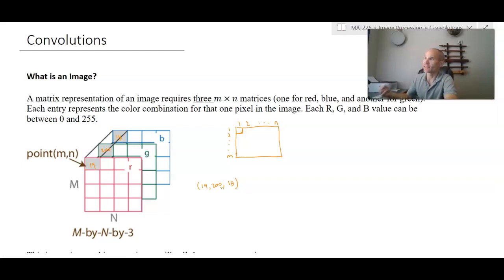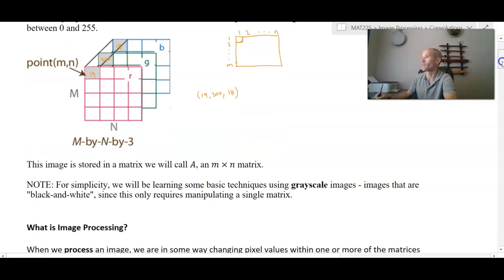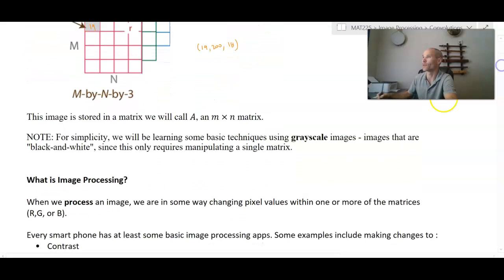So, given that that is the case, these are numerical values, we can manipulate these values in certain strategic ways and make the image change in its appearance. That is called image processing. We are processing the image to look like something different than what the original image shows.